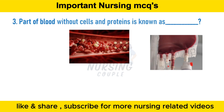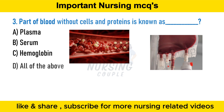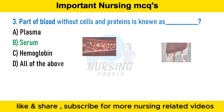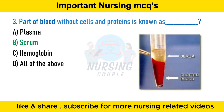The path of blood without cells and proteins is known as: option A plasma, option B serum, option C hemoglobin, option D all of the above. The answer is option B serum. Serum is the fluid and solute component of the blood which does not play a role in clotting. It may be defined as blood plasma without the clotting factors, or as blood with all the cells and clotting factors removed.